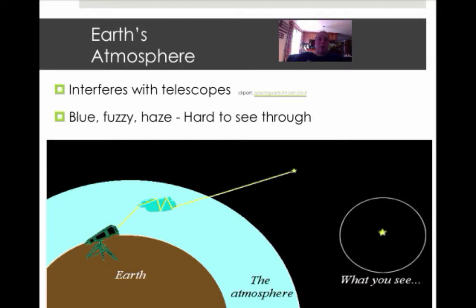Now the Earth's atmosphere interferes a lot with telescopes. The problem is that you get this blue fuzzy haze and it's very hard to see through. What you would see would be a lot of fuzz. It would not be nearly as clear.